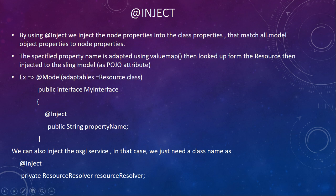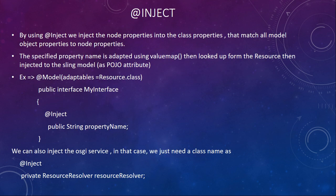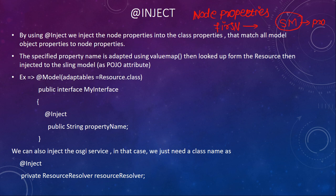What does @Inject mean and why do we use it? Consider a node property — for example, a user enters a value like 'first name'. This value you want in your Sling Model. A Sling Model is simply a POJO class — a Plain Old Java Object.